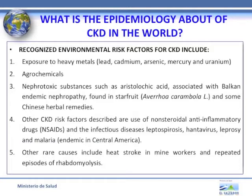Recognized environmental risk factors for CKD include exposure to heavy metals: lead, cadmium, arsenic, mercury, and uranium. Agrochemicals and nephrotoxic substances such as aristolochic acid, associated with Balkan endemic nephropathy and found in star fruit and some Chinese herbal remedies, are also implicated. Other CKD risk factors include use of non-steroidal anti-inflammatory drugs and infectious diseases like leptospirosis, hantavirus, leprosy, and malaria, which are endemic in Central America. Other rare causes include heat stroke in mine workers and repeated episodes of rhabdomyolysis.